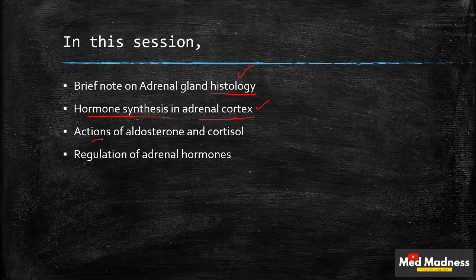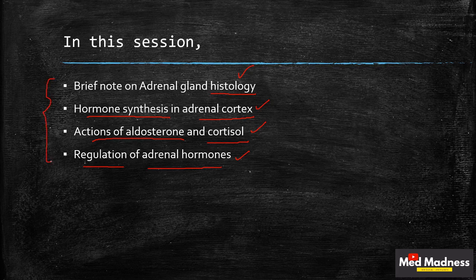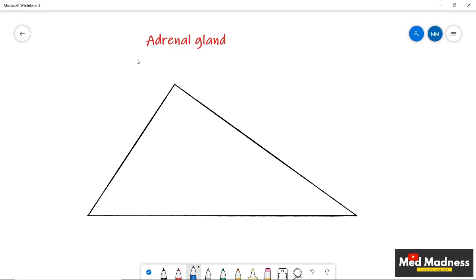We'll cover the actions of aldosterone and cortisol and how they are regulated. At the end of this session, you'll be able to answer all four questions. We'll talk about the adrenal gland histology very briefly. The innermost part of the gland we call the medulla and the outermost is the cortex.